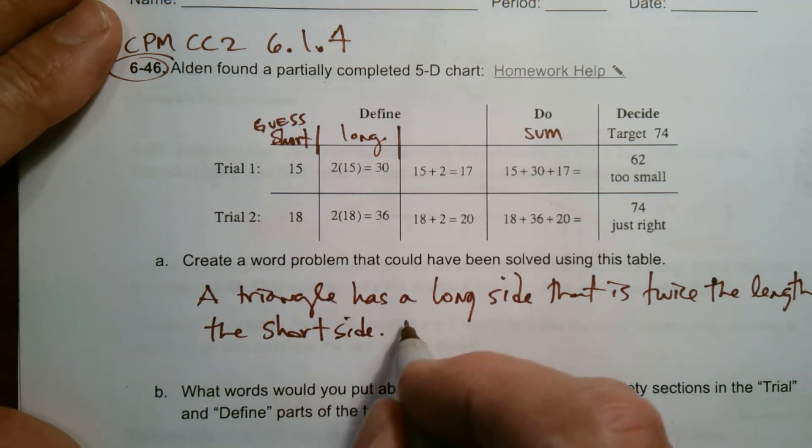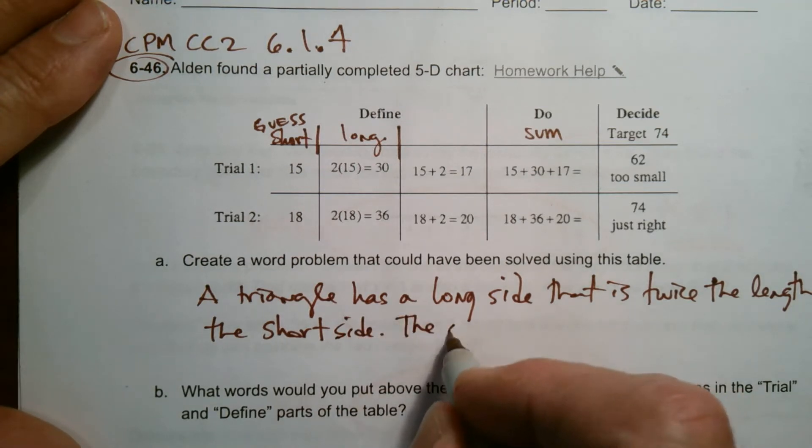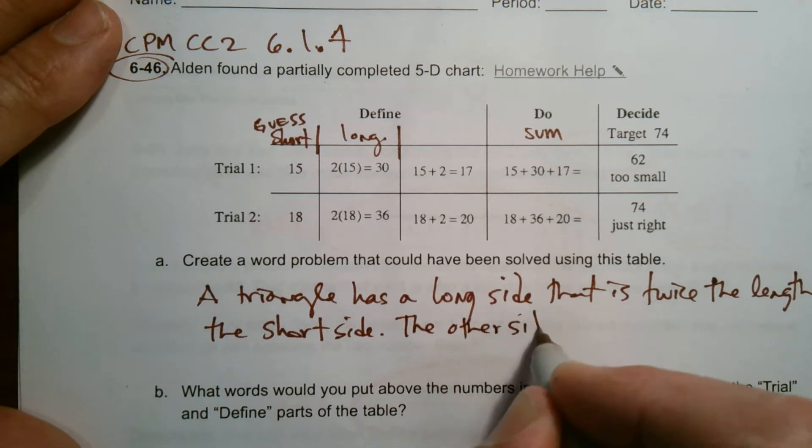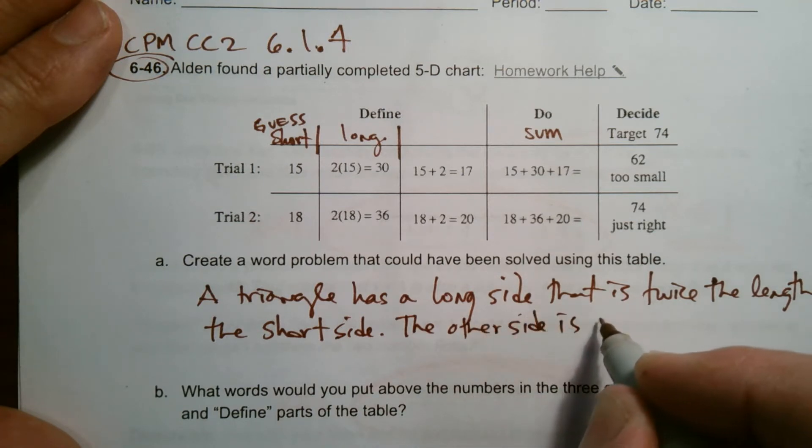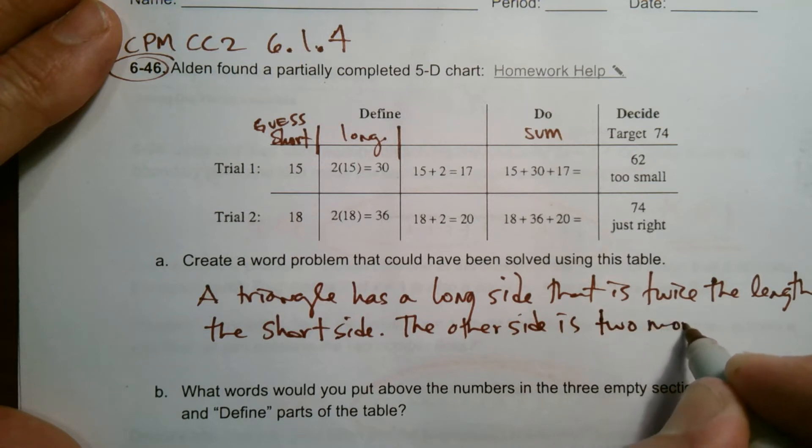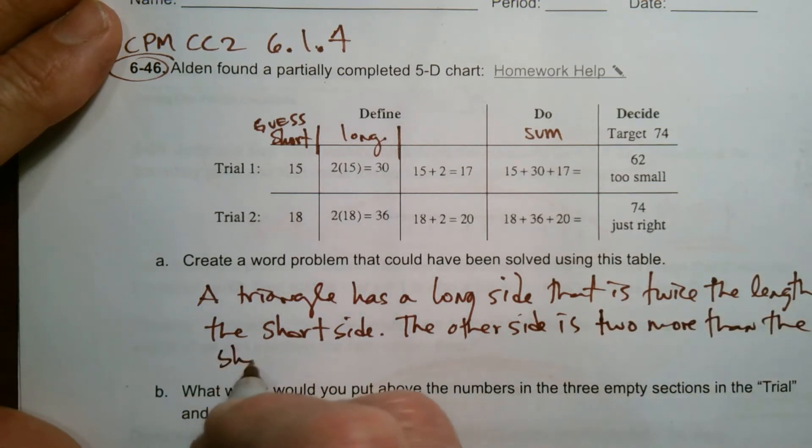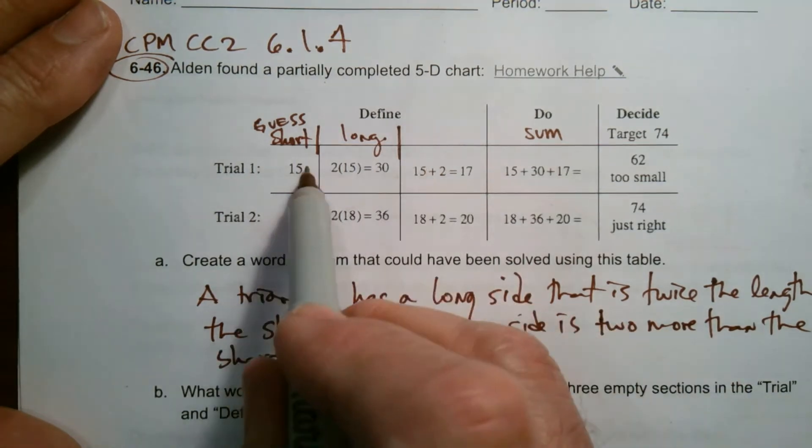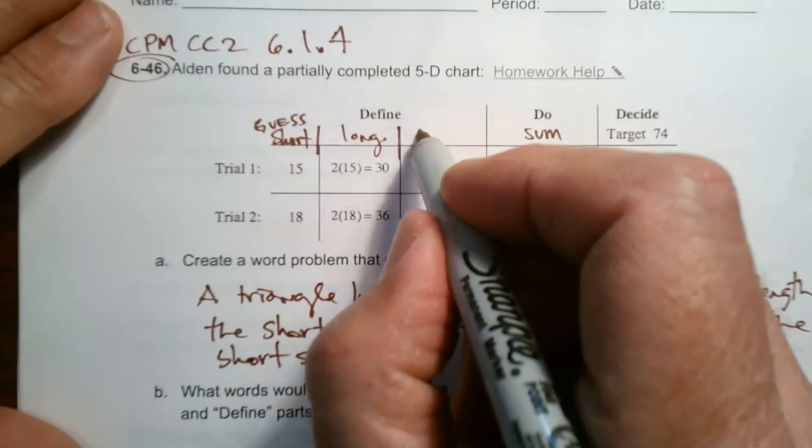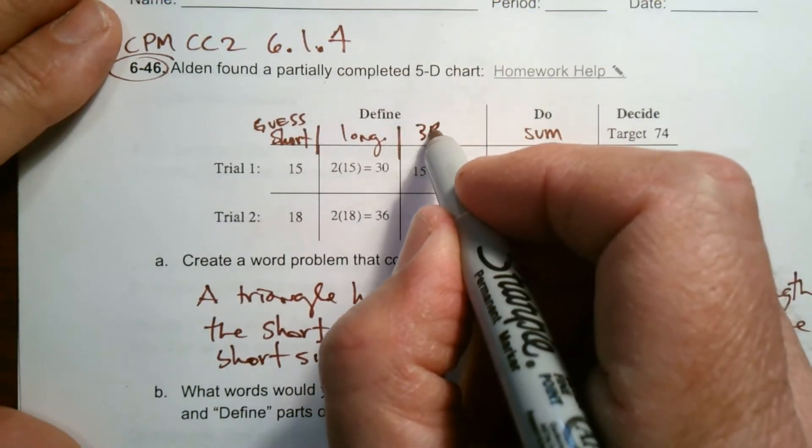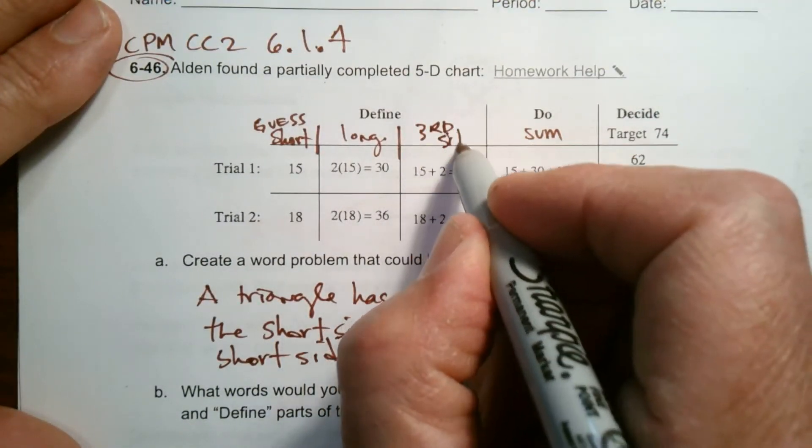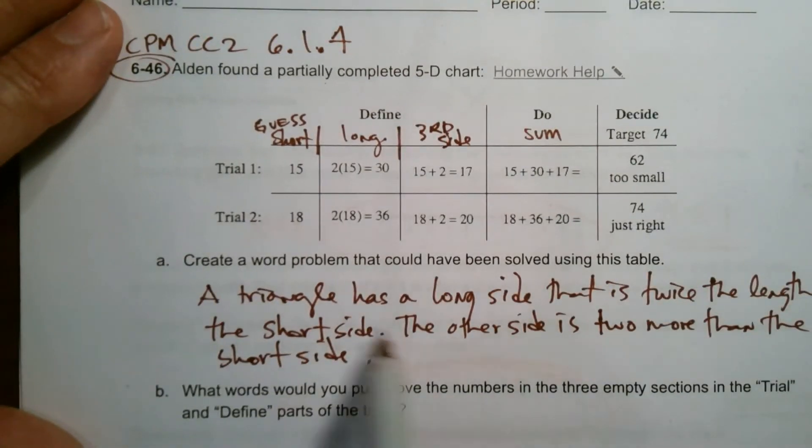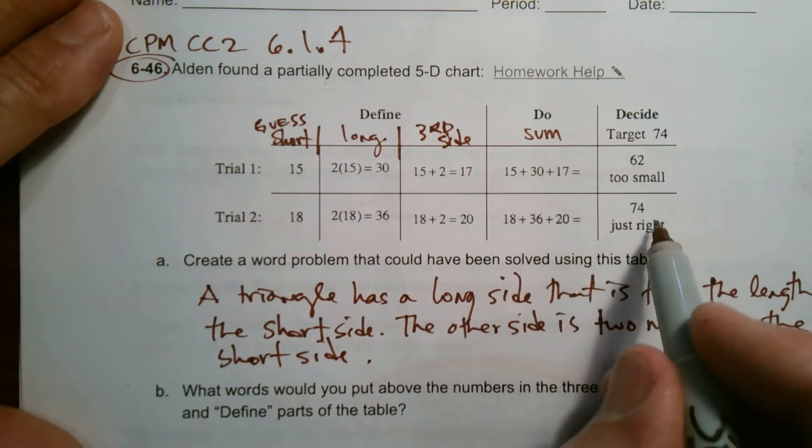And then we would say the medium or the other side is two more than the short side. And where am I getting that from? From right here. So there's the short side. So this is the other or third side, however you want to call it. So the third side, I could have said the third side, the other side is two more than the short side.